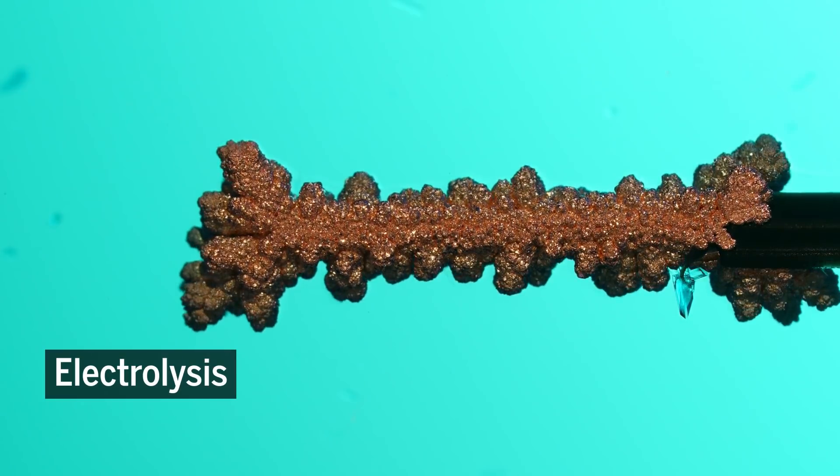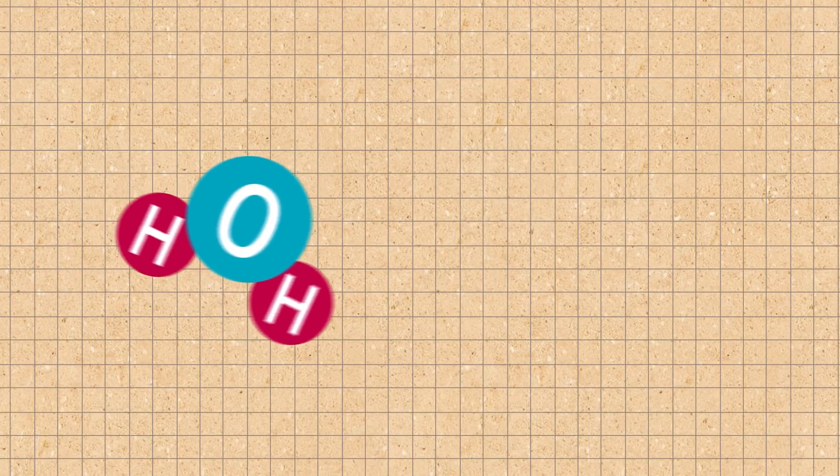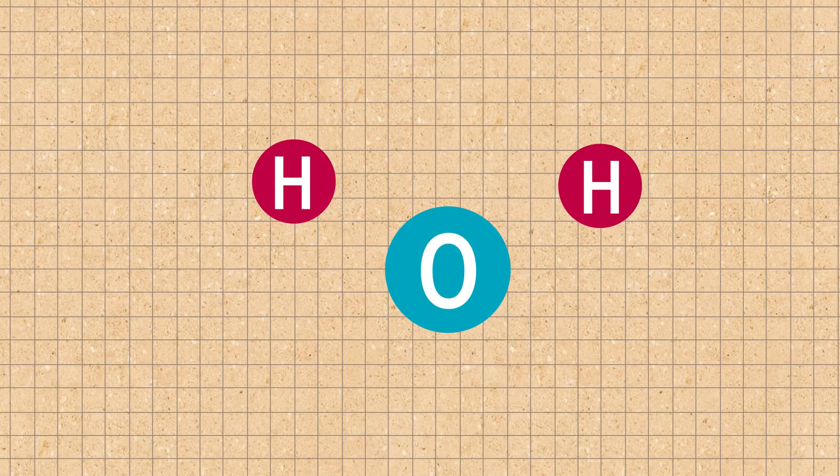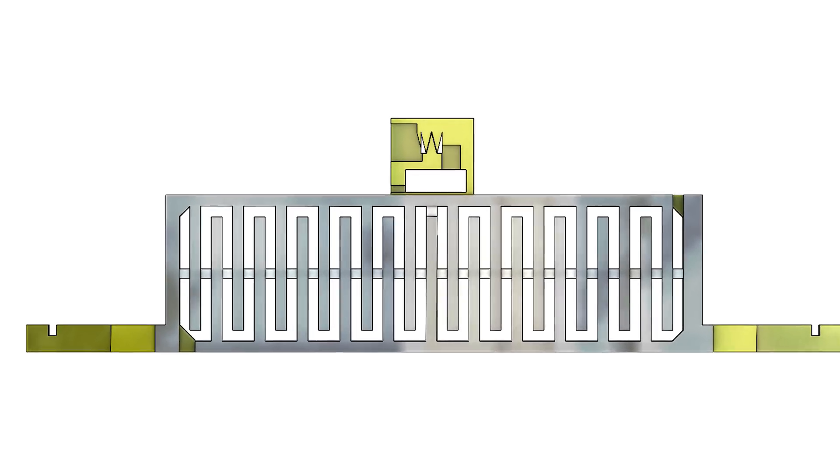Electrolysis is a chemical reaction jump-started by an electric current. In water, electrolysis breaks up the H2O molecules into hydrogen and oxygen. The researchers attached an electrolysis device to the robot, as well as an electric sparker.